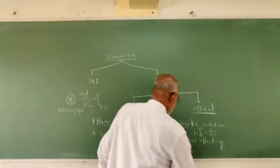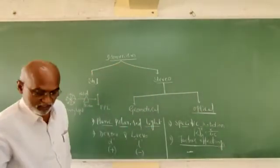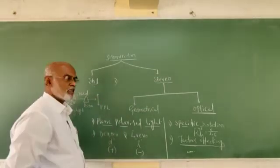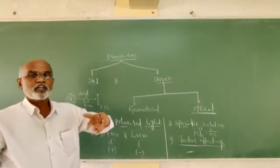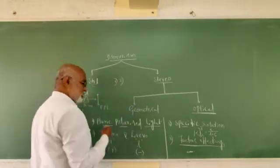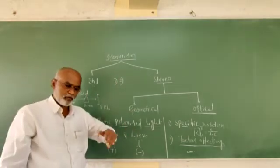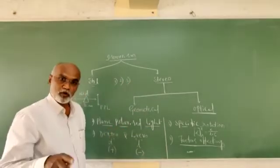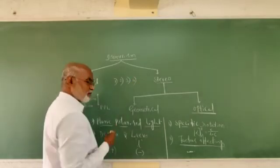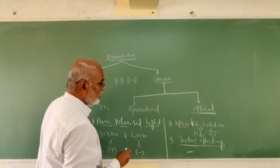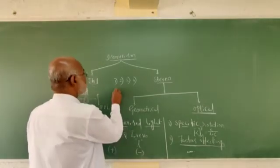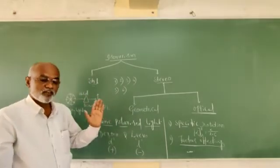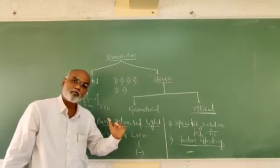The specific rotation of an optically active compound depends on six different factors. The first is the nature of the compound — changing the compound changes the specific rotation. The second is the nature of the solvent — changing the solvent changes the specific rotation. The third is the wavelength of the polarising light. The fourth is the temperature. The fifth is the concentration of the solution, and the sixth is the length of the solution.